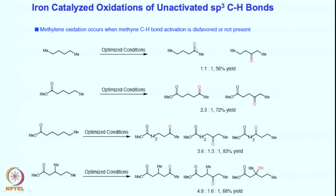Why is a ketone forming rather than the hydroxylated product? Once the hydroxylated product is formed, the secondary alcohol is too reactive — stabilizing it is very difficult. That secondary alcohol immediately reacts with another equivalent of the catalyst to give the ketone. If there is a possibility of ketone or aldehyde formation, it will not stop at the hydroxylated product.